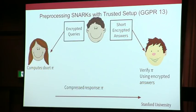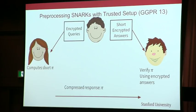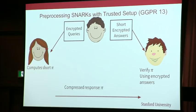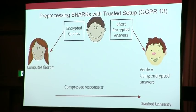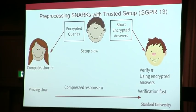The tool used to do this are preprocessing SNARKs that have a trusted setup, where the setup encrypts some queries and short answers, the prover can compute a short proof, and the verifier can very efficiently check it. They have amazing properties, especially constant verification time and constant proof sizes, but they also have one major downside, which is this trusted setup.